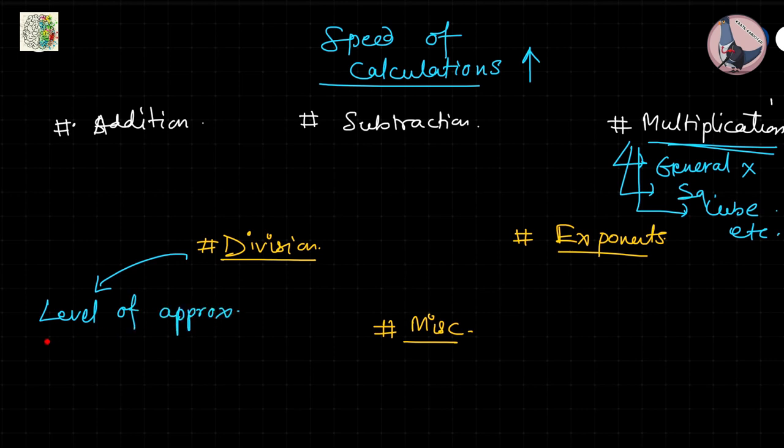Sometimes you will get exact division but that will take more time. Do we need that sort of detailed division? That will depend on many factors like what are your options given or how close you want to get to the number. Depending on the level of approximation, we will see different division techniques. We will also talk about ratios.